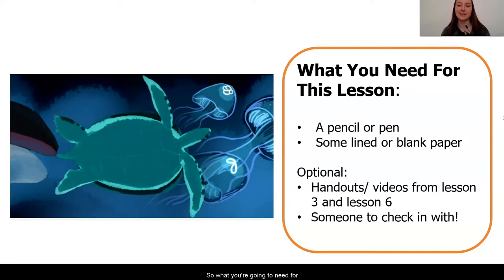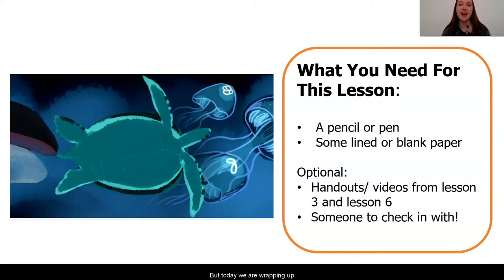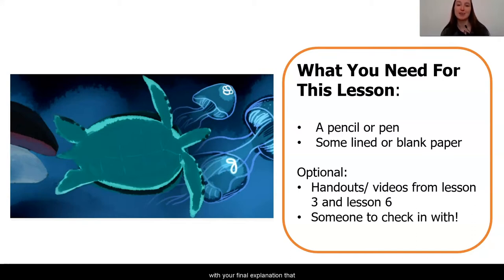What you're going to need for this lesson today is a pencil or pen and some blank or lined paper. I really recommend that you have this out so that you can take notes from the evidence cards that we look at so that you can use it in your final explanation. I also really recommend that you find somebody to check in with — a family member or a friend you can message or text. If you have access to the handouts from lesson three and lesson six, this contains some evidence that might help you with your final explanation at the end of this lesson.